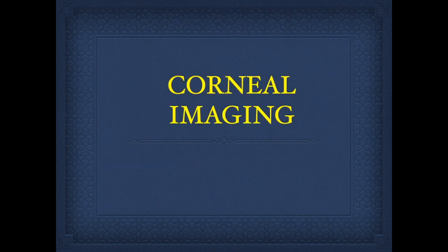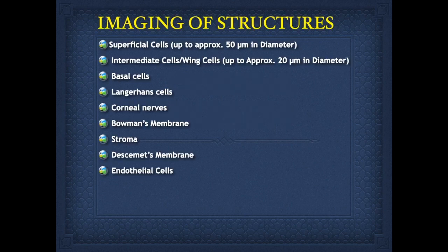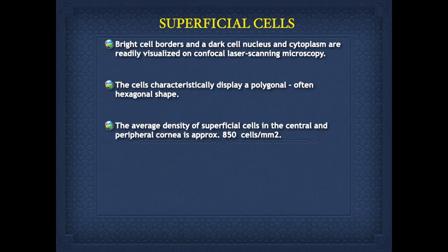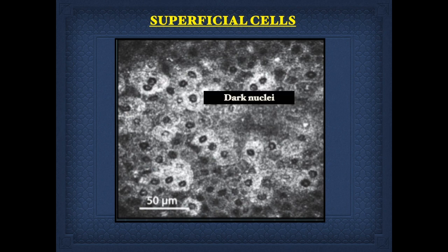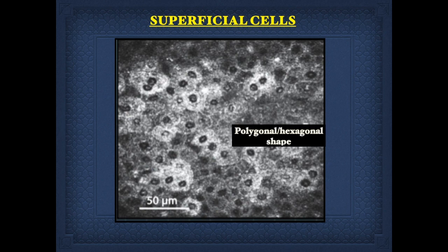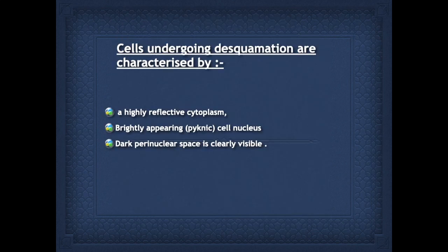Coming to the practical applications of corneal imaging, it images many corneal structures which can be seen anatomically as well as understood for their pathological basis. Coming to the superficial cells, they have bright cell borders, dark nuclei and polygonal hexagonal shape. When they undergo desquamation, they reflect high reflective cytoplasm, bright appearing cell nuclei and dark perinuclear spaces, which is clearly visible.